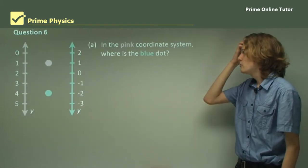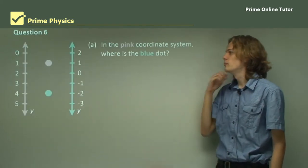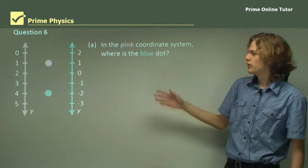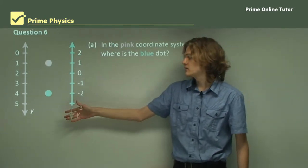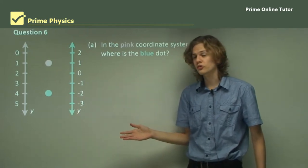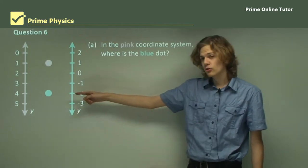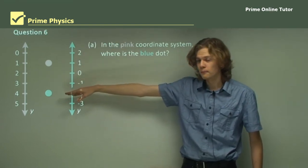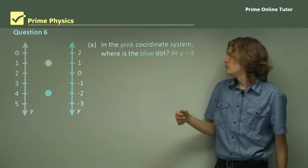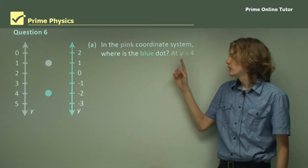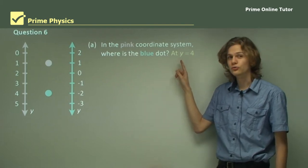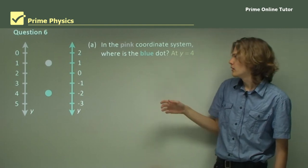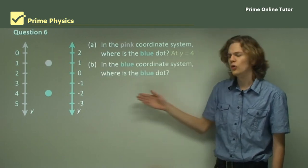Question 6. In the pink coordinate system, where is the blue dot? Here's our pink coordinate system — it has a y-axis, so it's a one-dimensional coordinate system. If we look at the blue dot, it lines up with y equals 4. So in the pink coordinate system, the blue dot is at y equals 4. Now let's take a look at a different coordinate system — in the blue coordinate system, where is the blue dot?